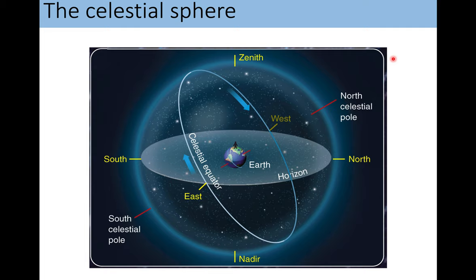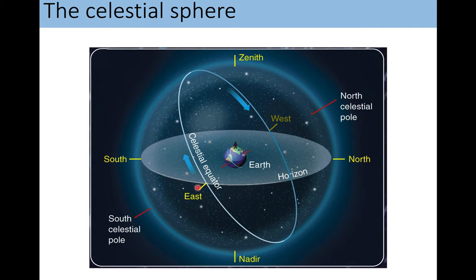We have the north and south celestial poles aligning with Earth's poles, and the celestial sphere appears to rotate around them. As the night goes on and that celestial sphere rotates, new stars are rising above the horizon into the half you're able to see, while stars you could see will set below the horizon in the west. Throughout the night, if you stared at the sky all night long, you would see the whole celestial sphere rotating from east to west — new stars appearing in the east, others setting in the west.